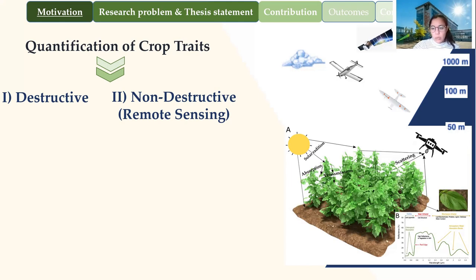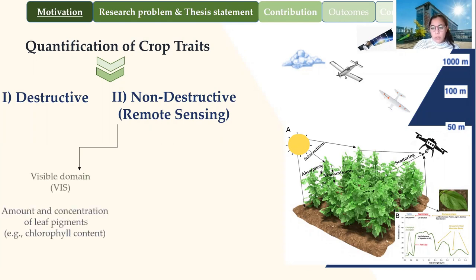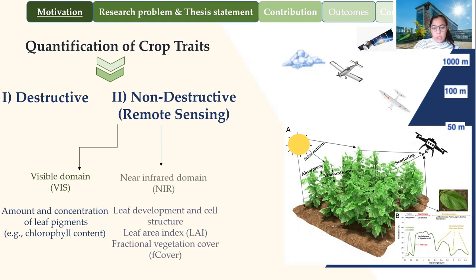I would like to illustrate the general principle of remote sensing. Light coming from the sun hits the object, which could be the plant or the soil. This light can be absorbed by the plant, and another part transmitted, and the rest will be reflected. In optical remote sensing, the sensor records the reflected radiation, which contains meaningful information. The typical spectral curve of vegetation is divided into three parts: the visible domain region, which is governed by leaf pigments including chlorophyll content; the near infrared, which is dominated by the leaf structure, such as leaf area index and fraction vegetation cover; and the shortwave infrared, which is dominated by leaf biochemicals including water content.